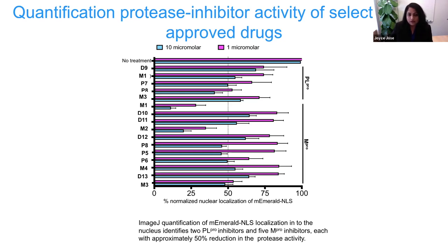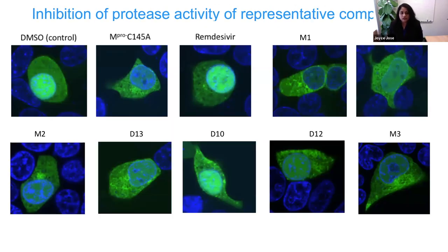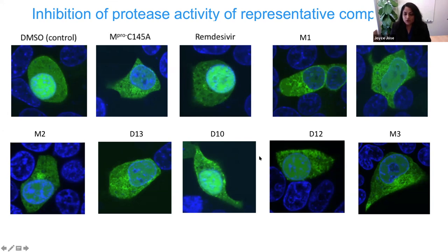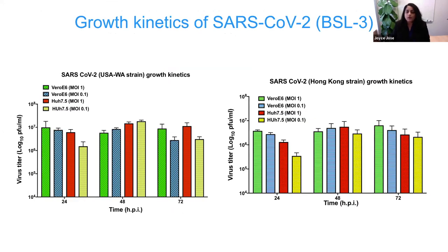We selected drugs from the screen that are not cytotoxic. We can see the different localization of the constructs in drug-treated cells. DMSO was used as a control — with active protease, all protein is in the nucleus; with inactive enzyme, there is no nuclear localization. Blue represents nuclei stained by Hoechst stain. Remdesivir was used as a negative control because it's an inhibitor of RNA-dependent RNA polymerase, not targeted by protease inhibitors — so there is no effect. The selected compounds showed varying efficiency in inhibiting nuclear trafficking.